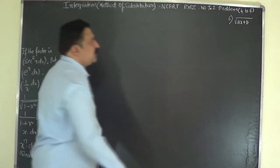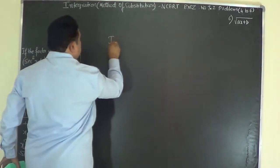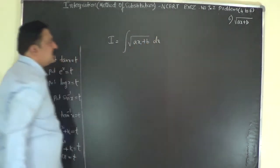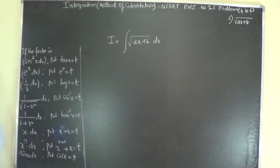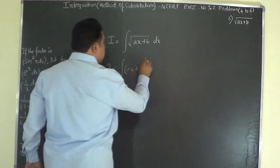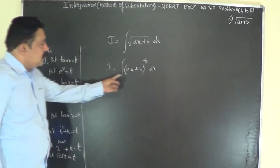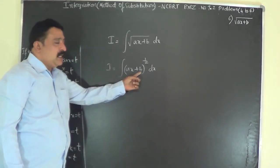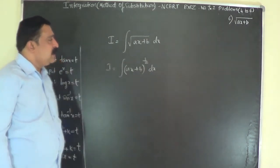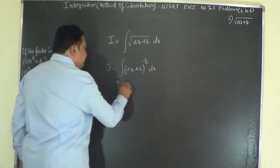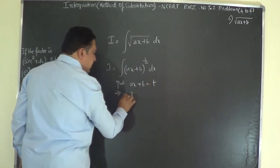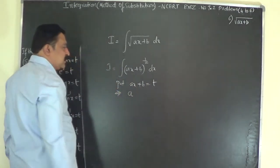Problem number 6 is of a type already discussed in the last video, solvable by two methods. It is I equals the integral of (ax + b)^(1/2) dx. Since ax + b is a linear term, put ax + b equals t. You can also directly write the answer using the formula, but let us use substitution.